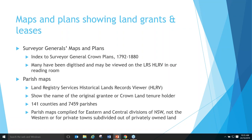Parish maps show the name of the original grantee or the Crown land tenure holder. There are 141 counties and 7,459 parishes, and parish names do tend to be reused in different counties, so you need to know which county your parish is in, otherwise you won't get the right map. They did do parish maps for the Eastern and Central Divisions of NSW, but not for the Western Division — there you'll usually see county maps with parishes delineated on them. Private towns subdivided out of privately owned land won't have separate maps either.